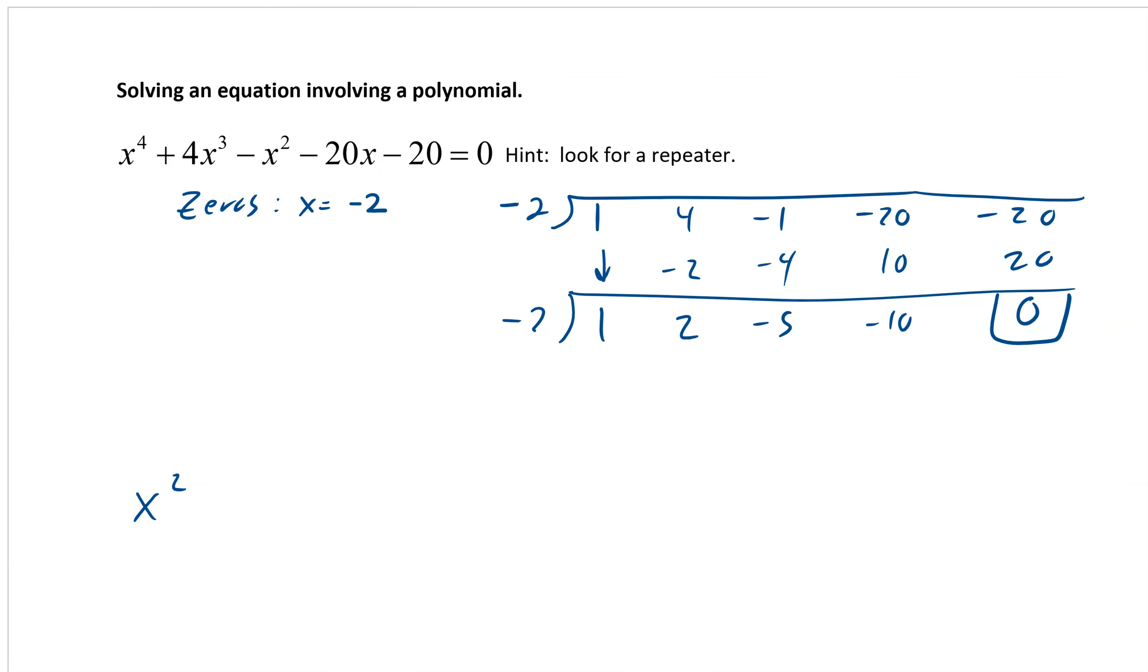So, if it has multiplicity of two, then it'll work twice because it's a zero twice. One of our zeros is x equals negative two, and we're going to use synthetic on it. This is one, four, negative one, negative twenty, and negative twenty. It's going to be zero at the end because we know our remainder theorem. That would be one, negative two, that's two, that's negative four, so negative five. That would be 10, so negative 10, and together that makes 20.